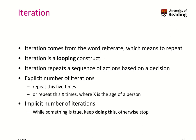There are two types of iteration. The first is explicit numbering: you can say repeat this five times, or repeat this x times where x is the age of a person. For example, when preparing a birthday cake, place x number of candles on it, where x is the person's age.